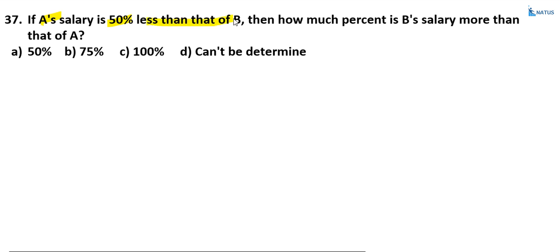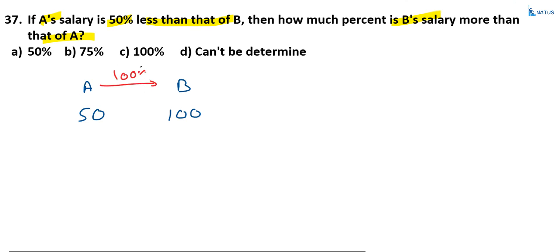A's salary is 50% less than that of B. How much percent is B's salary more than A's? Suppose B's salary is equal to 100, then A's salary is equal to 50. B is two times A. If you add 50 to A, it becomes 100, so the percentage is 100. A shortcut: if A's salary is X percent less than B, then how much percent is B more than A? That is X by (100 minus X) into 100.